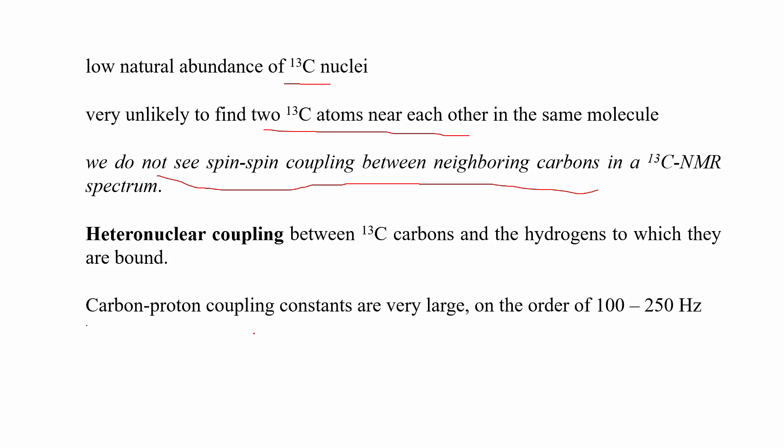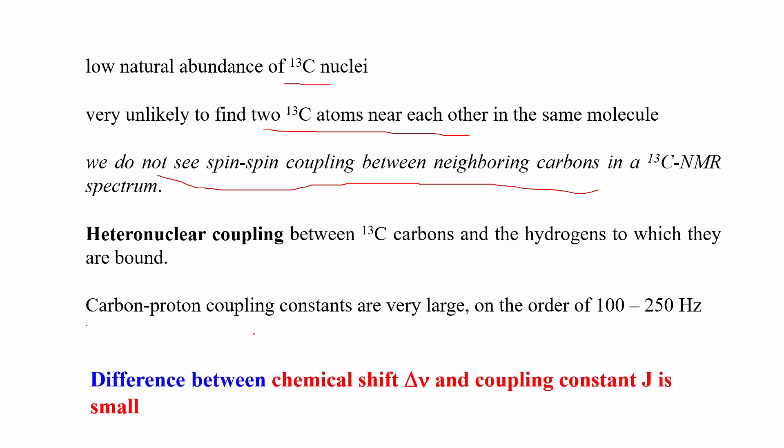The carbon-proton coupling is actually a one-bond coupling — carbon single bond hydrogen. Its coupling constant is very large, on the order of 100 to 250 hertz. That is why the difference between the chemical shift delta-nu and the coupling constant J is very small, creating a strong possibility for signal overlapping between the multiplets. That is the reason why certain decoupling techniques are required.